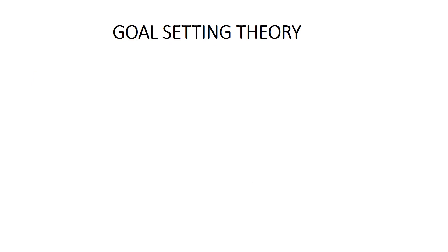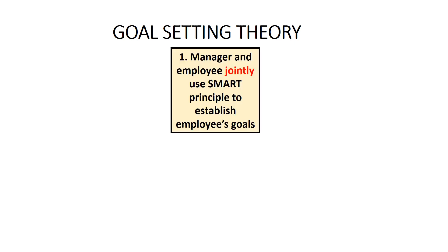In this video, we'll be looking at our second theory of motivation, which is Locke and Latham's goal-setting theory. According to this theory, employees are motivated by being given challenging goals. This theory takes the form of a cycle which consists of five stages. In this regard, it's very different from Maslow's hierarchy of needs, where there is a ranking of needs that employees want to have satisfied.